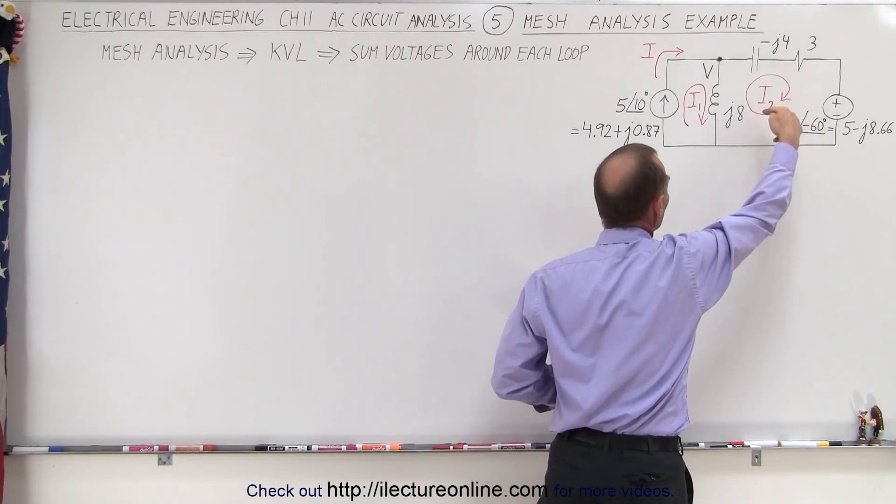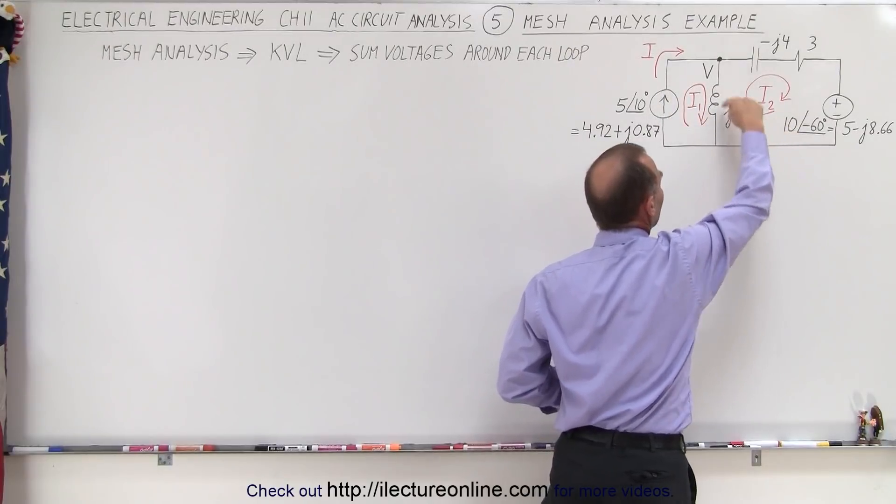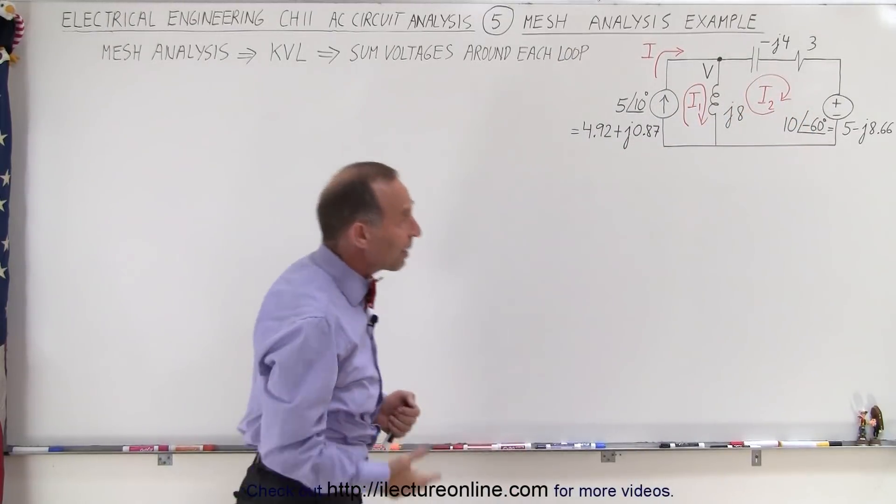So we have two meshes or two loops and we add up the voltages. I1 will be the current flowing through the first loop and I2 will be the current flowing through the second loop or the second mesh.